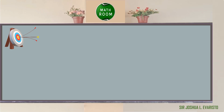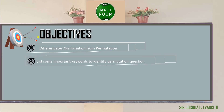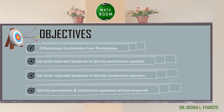Before we proceed on our discussion, let me present to you our objectives. At the end of this lesson, you should be able to differentiate combination from permutation, list some important keywords to identify permutation questions, list some important keywords to identify combination questions, and identify permutation and combination questions without keywords. Let's begin.